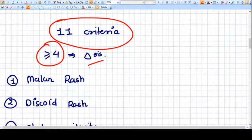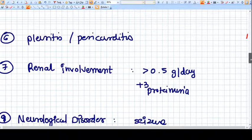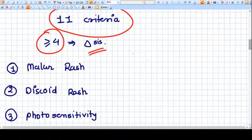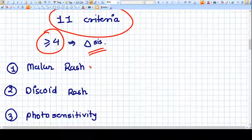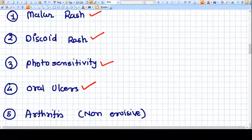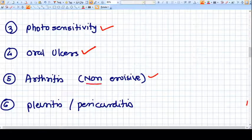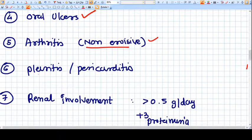There are 11 criteria - if four or more criteria are present, then we can make the diagnosis of SLE. What are those 11 criteria? First of all, some clinical criteria like malar rash, discoid rash, photosensitivity, oral ulcers.